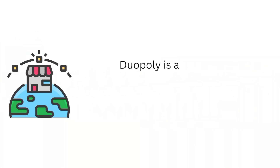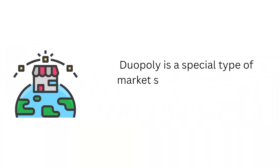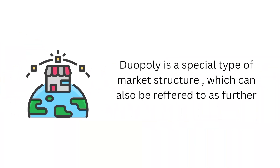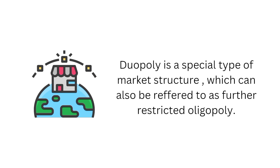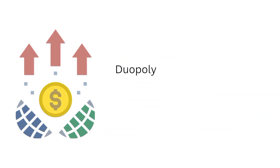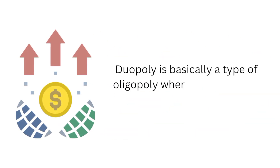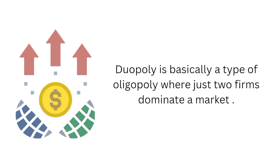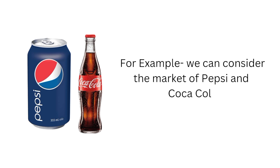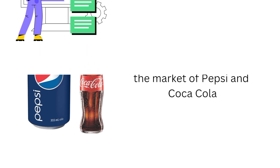Duopoly is a special type of market structure, which can also be referred to as a further restricted oligopoly. Duopoly is basically a type of oligopoly where just two firms dominate a market. For example, we can consider the market of Pepsi and Coca-Cola.